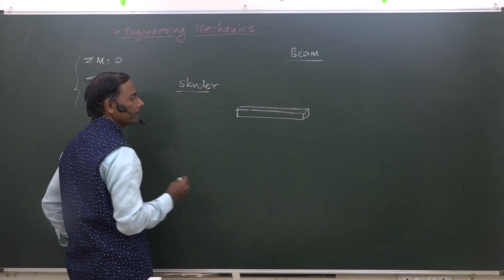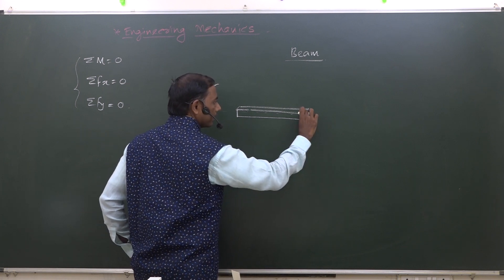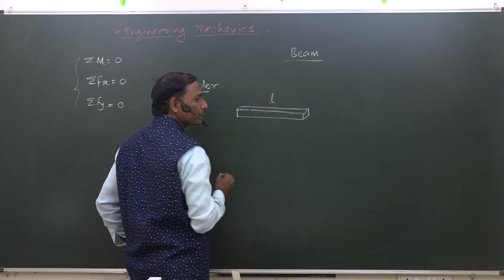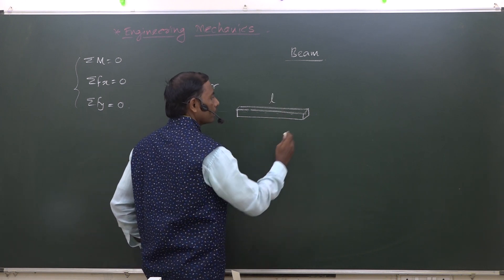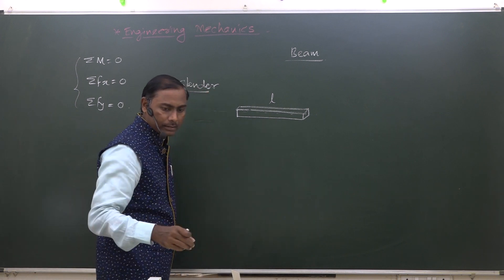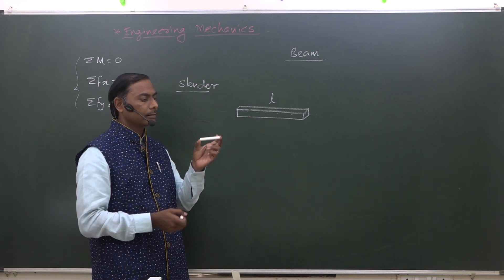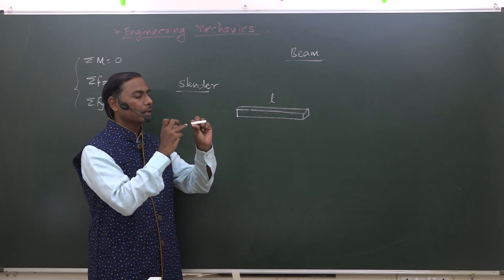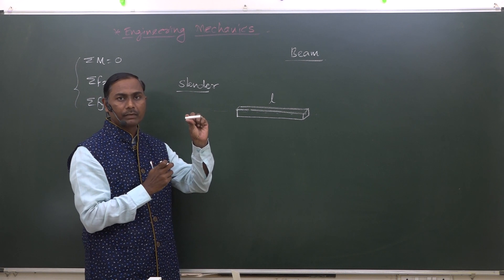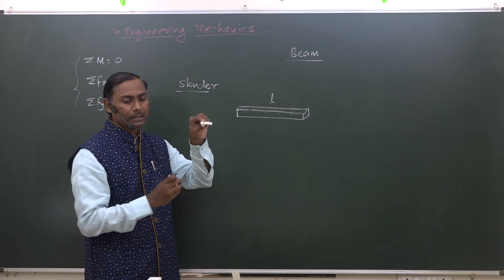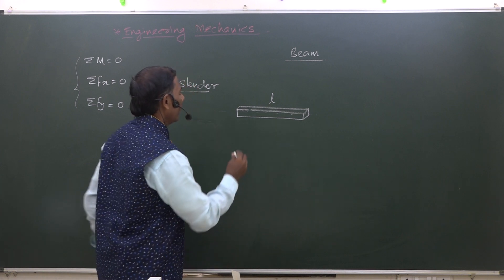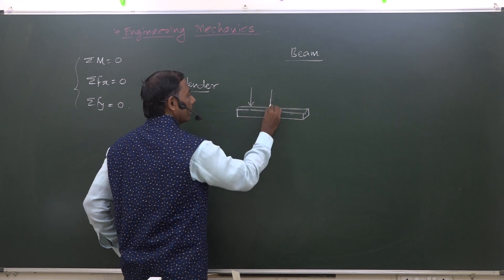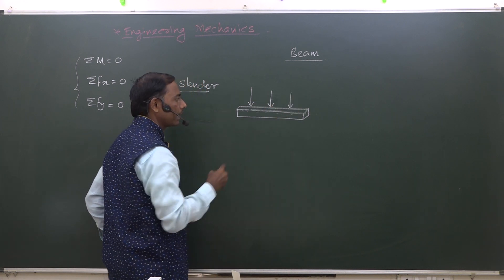What does slender mean? If you talk about its width or thickness, that is its depth, these two dimensions are very less compared to its length along the longitudinal axis. Such a member is called a slender. For example, this chalk is a slender, but a short piece is not a slender, because the length dimension is very high compared to its cross-sectional dimensions. It is a horizontal slender member subjected to loading always perpendicular to the longitudinal axis.